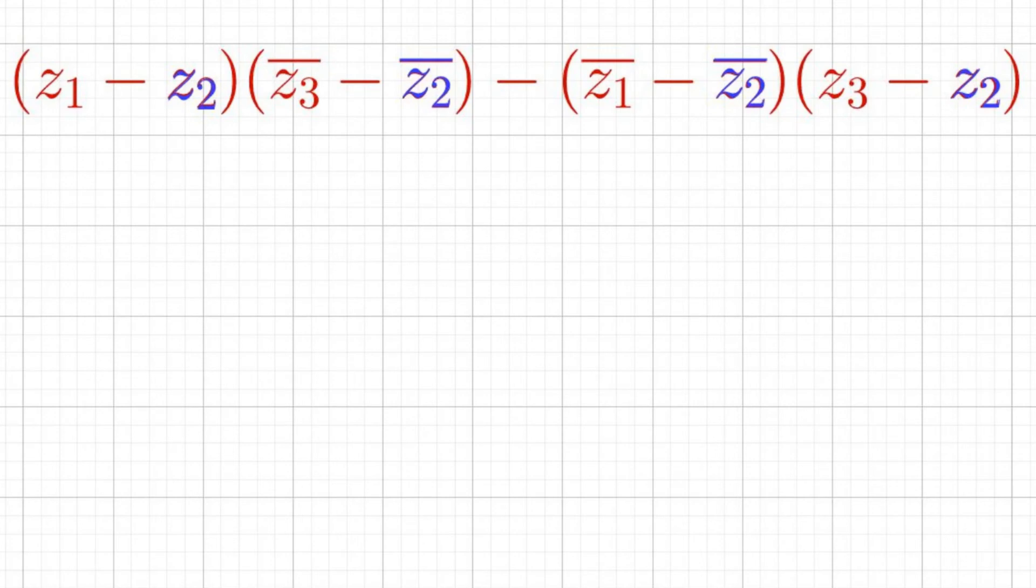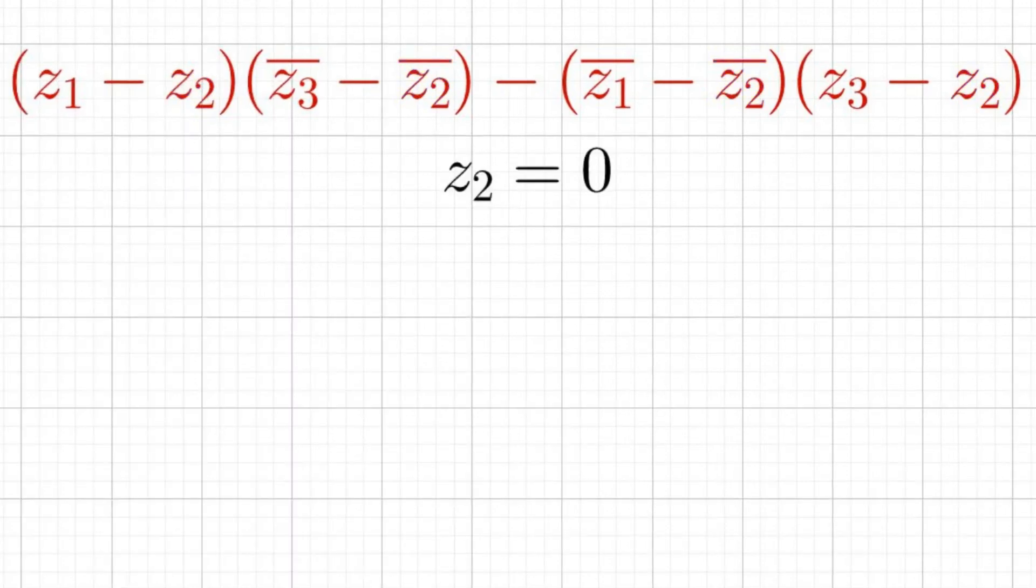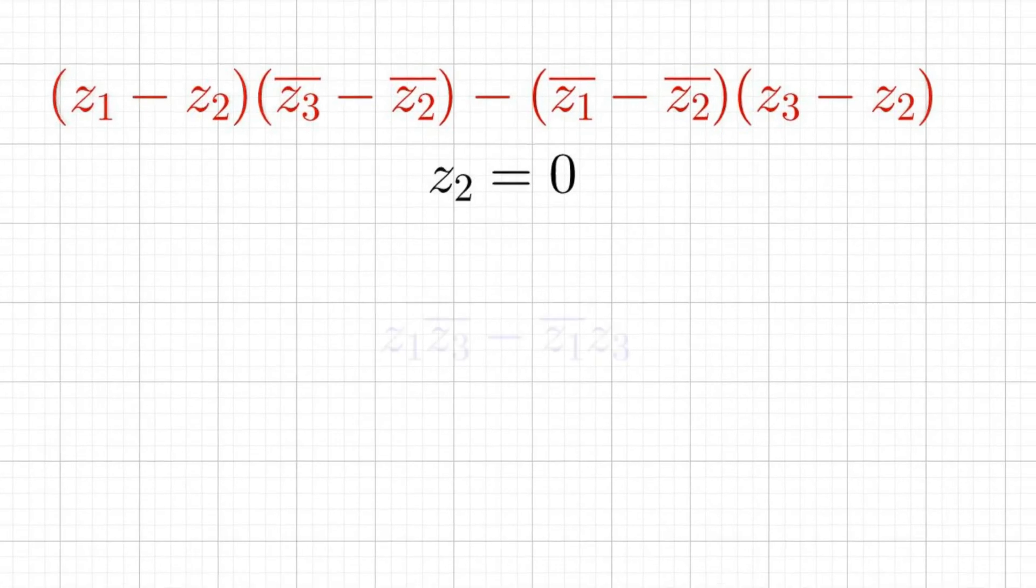Since we're solving this problem by using numbers on the complex plane, we assign Z2 to be the origin. This way, not only is Z2 equal to its conjugate, but it's equal to a particularly useful number, zero. This cuts out a lot of our work and simplifies the expression to Z1 conjugate Z3 minus conjugate Z1 Z3.